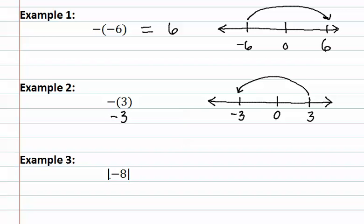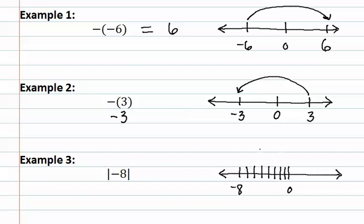In example three, we have vertical bars, which indicate absolute value. Absolute value, remember, is the distance from zero. If we place negative eight on the number line and count how many places — the distance it is from zero — we find that it is a distance of eight units from zero. Therefore, the absolute value of negative eight is eight.